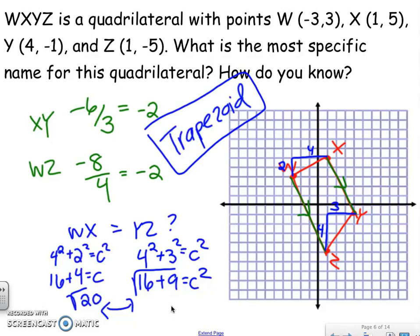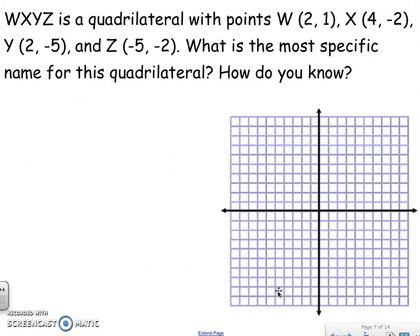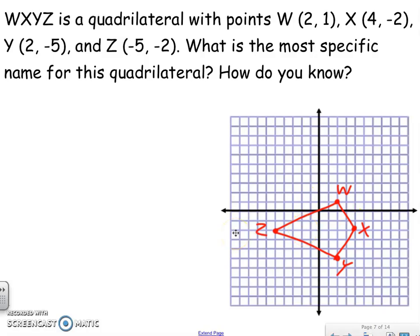If the legs were the same, that would be an isosceles trapezoid. Time for one more on the graph. Go ahead and graph that quadrilateral and see if you can get a feel for what shape it is. After graphing, it looks like a kite turned on its side. To prove it's a kite, I need to verify that WX equals XY, and then that the bottom two sides WZ and YZ are also equal to each other.